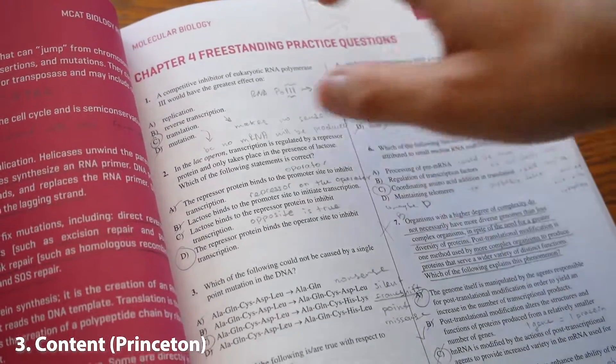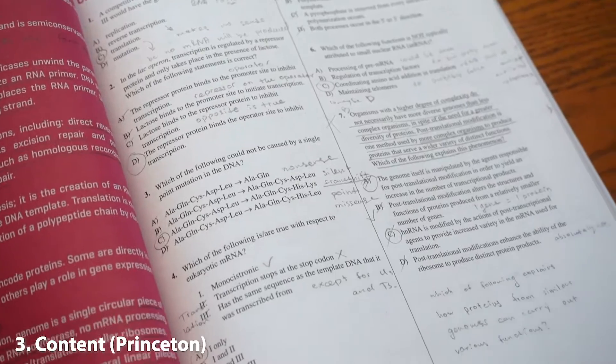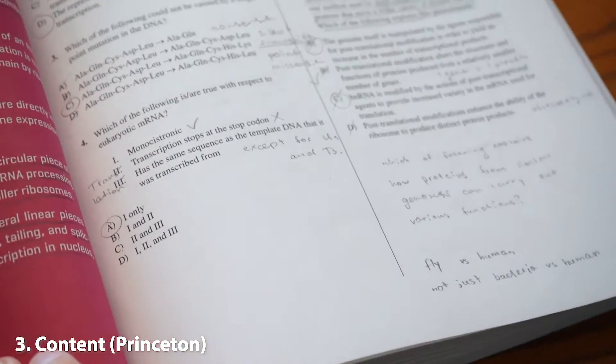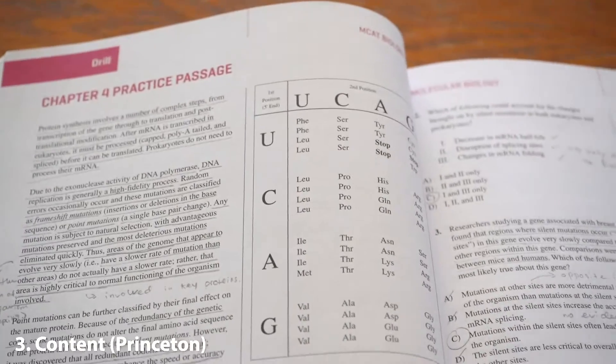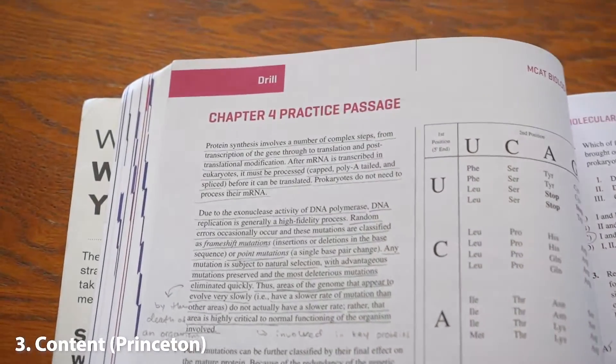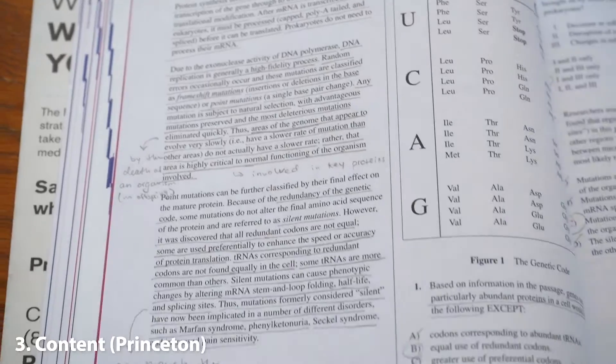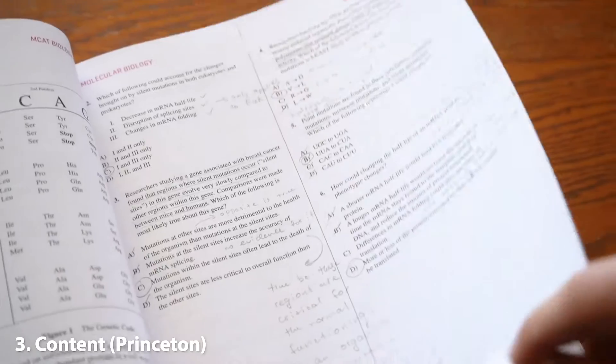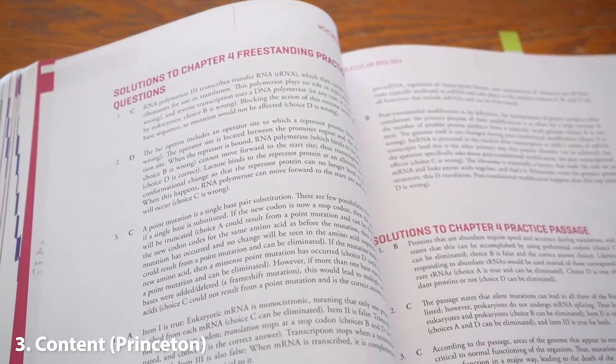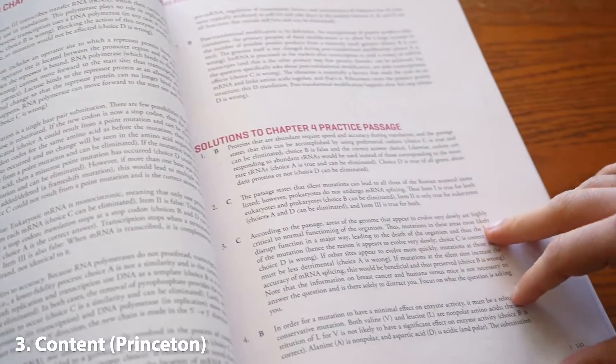You also get a set of questions towards the end. And they give you about six to eight roughly free-standing questions. And on the second page, they give you a real passage. And you get about six to eight questions on that too. And then if you flip again, you will find the explanations and solutions towards the end, which are very easy.